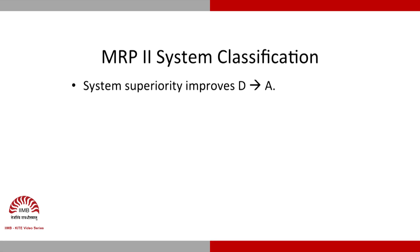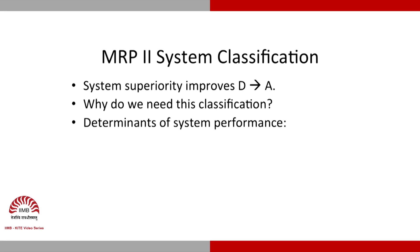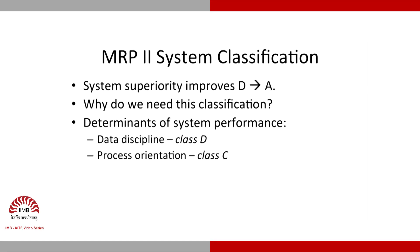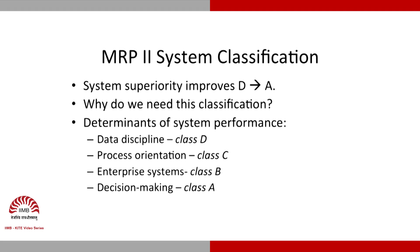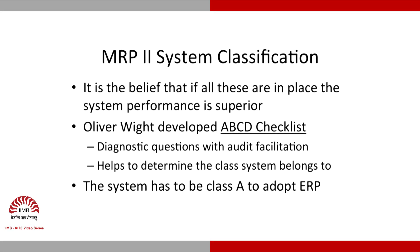System superiority improves from Class D to Class A. The classification is needed because the determinants of system performance differ: with no data discipline we are at Class D; moving to Class C requires overcoming that; Class B requires process orientation; and Class A requires enterprise systems that facilitate decision making. The belief is that if all these are in place, system performance is superior.